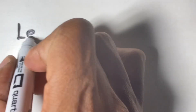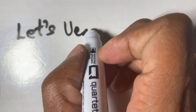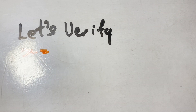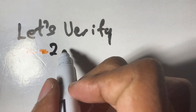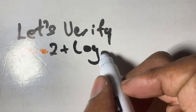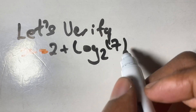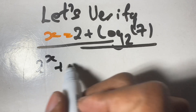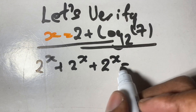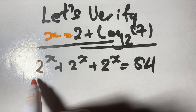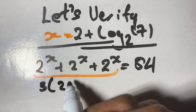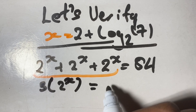Now let's go ahead and verify our solution. Let's verify that x equals 2 plus log base 2 of 7. We rewrite our equation and simplify it as 3 times 2 to the power of x equals 84.